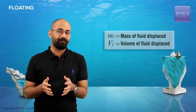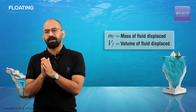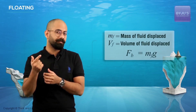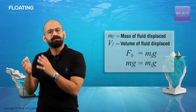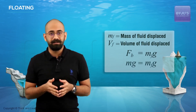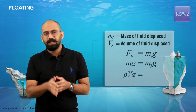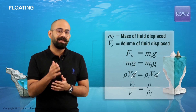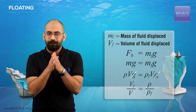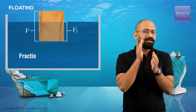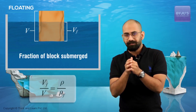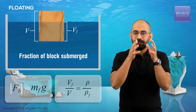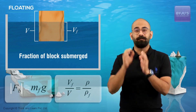Calling the mass of the fluid displaced MF and its volume VF, we get Fb equals MF × G. Substituting, M × G equals MF × G, and writing in terms of densities: rho × V × G equals rho_F × VF × G. Canceling G gives VF/V equals rho/rho_F. So the fraction of volume submerged equals rho/rho_F, and the magnitude of the buoyant force always equals the weight of the fluid displaced.